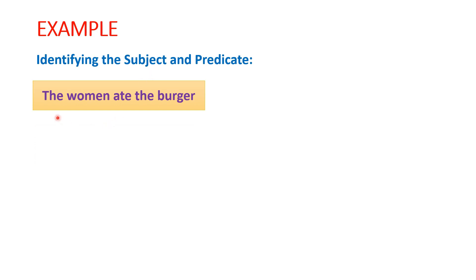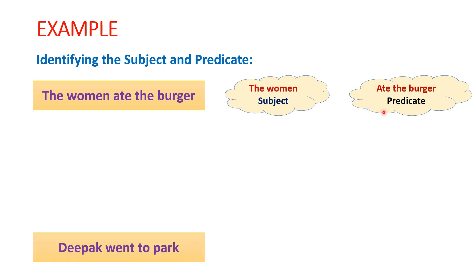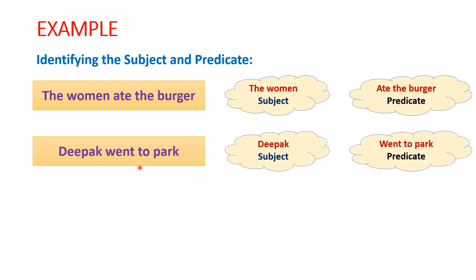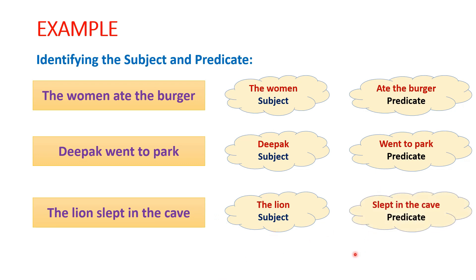The first sentence is 'The woman ate the burger.' Here, the woman is the subject and ate the burger is the predicate. The next sentence is 'Deepak went to park.' Here, Deepak is the subject and went to park is the predicate. The third sentence is 'The lion slept in the cave.' Here, the lion is the subject and slept in the cave is the predicate.